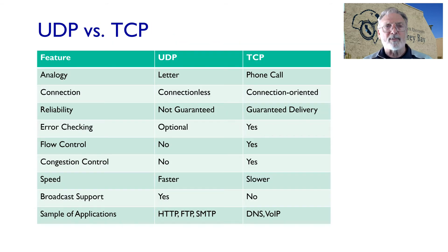This chart provides the contrast between UDP and TCP. You can see that UDP is faster than TCP and can support broadcasts. But if your application really needs reliable data transfer, TCP is the choice.